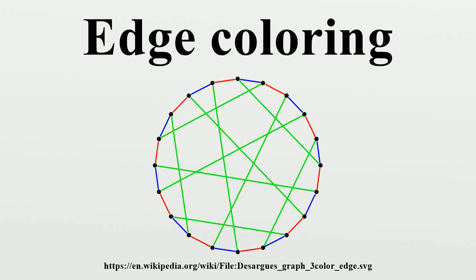Edge colorings are one of several different types of graph coloring. The edge coloring problem asks whether it is possible to color the edges of a given graph using at most k different colors, for a given value of k, or with the fewest possible colors.